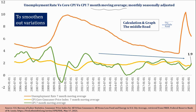A seven-month moving average is very good for smoothing out variations and gives you a fair idea of trends. You can calculate a moving average using Excel. When you compare using the seven-month smoothed data, you can see that headline CPI inflation has moved to about 1.9 percent and core is about 1.7 percent. There has been an increase in inflation in this period.